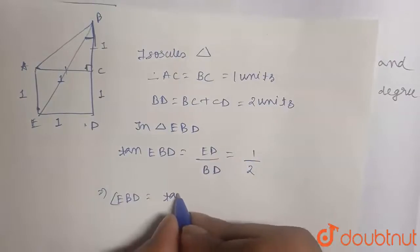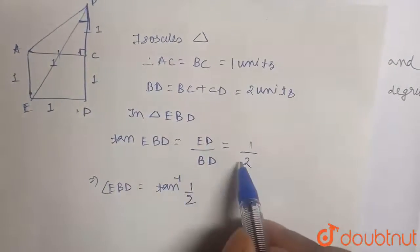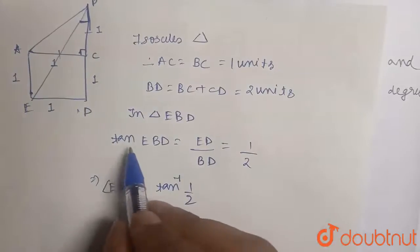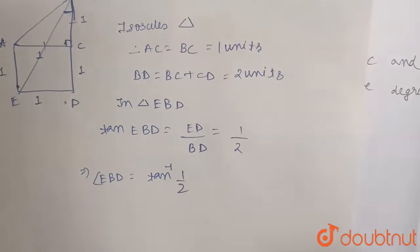...will be just tan inverse of one by two. When tan goes to the RHS part, instead of tan it will be tan inverse, which is also another trigonometric function.